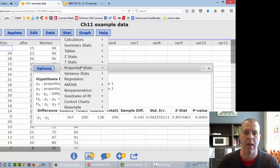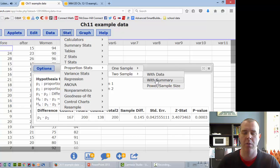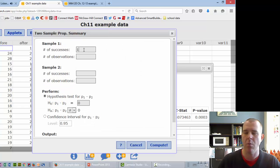Stat, proportion stats, two sample with summary. We had 113 successes out of 121, and then 90 successes out of 112. Now we're doing a confidence interval for the difference in proportions. So compute. Here is our difference in proportions.